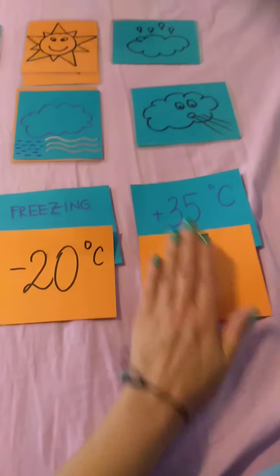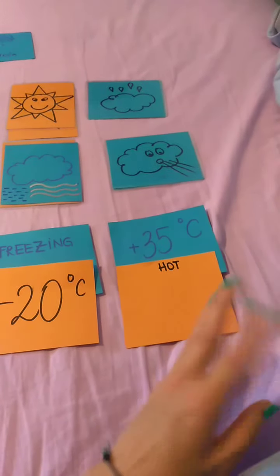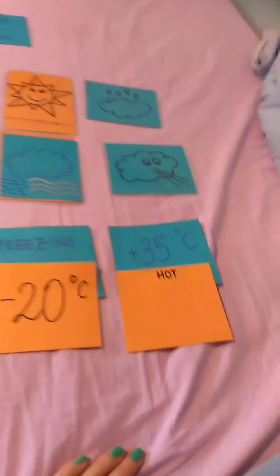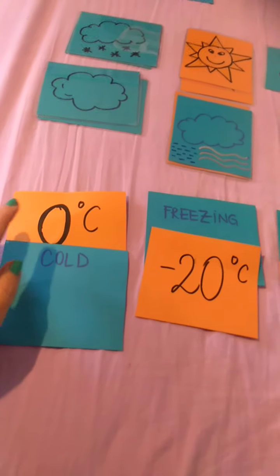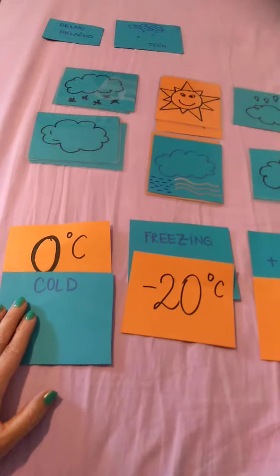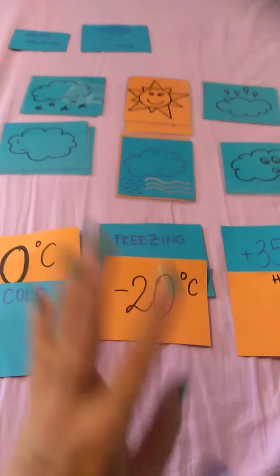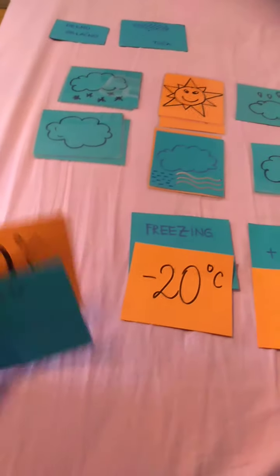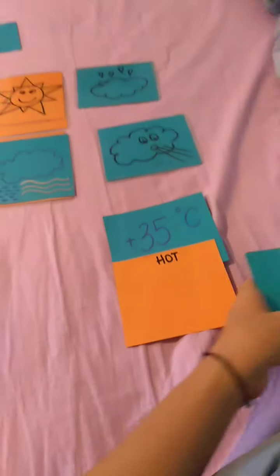Hot - res vroče - really hot, many degrees. Warm - toplo - around 20 to 23 degrees. Cold - mrzlo - around zero degrees. Cool - hladno - around 5 to 6 degrees. And freezing - da zmrzuje - really below zero, minus temperatures.